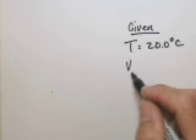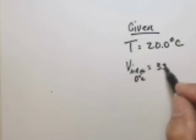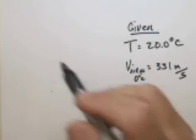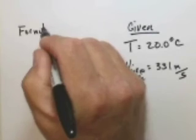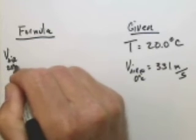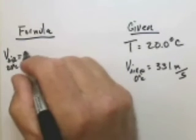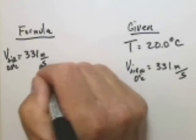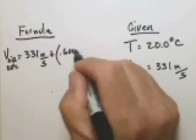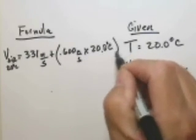We know that the speed of sound in air at zero degrees Celsius is 331 meters per second. From that we can incorporate our formula. Speed of sound in air at 20 degrees Celsius would equal 331 meters per second plus the change of 0.600 meters per second times the increase of 20.0 degrees Celsius.